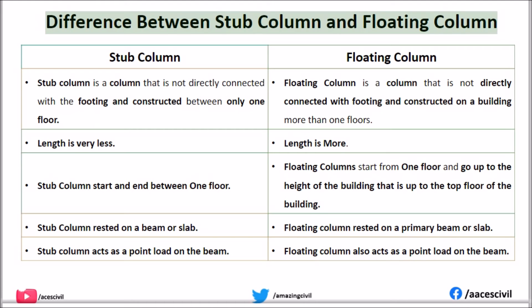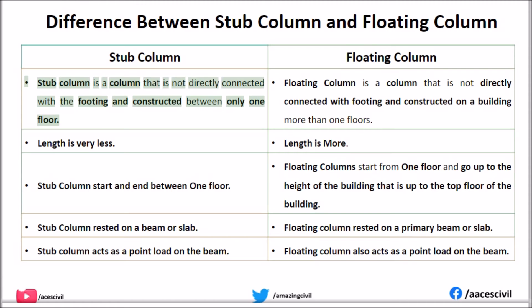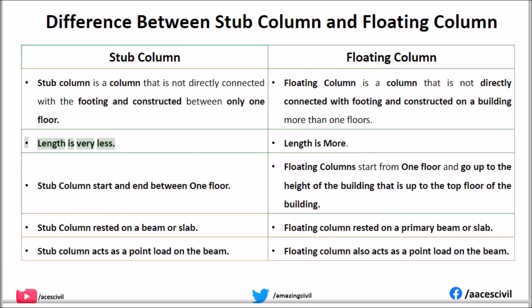Difference between stub column and floating column. A stub column is a column that is not directly connected with the footing and is constructed within only one floor, while a floating column is a column that is not directly connected with the footing but is constructed on a building across more than one floor. The length of a stub column is very less, while the length of a floating column is more. Stub column starts and ends within one floor, whereas floating columns start from one floor and go up to the height of the building, that is, up to the top floor.